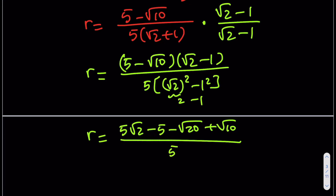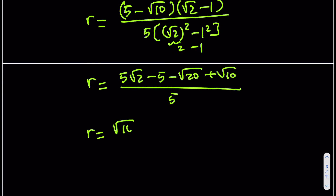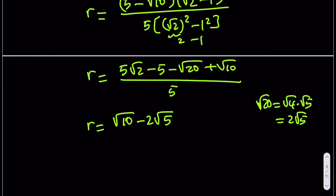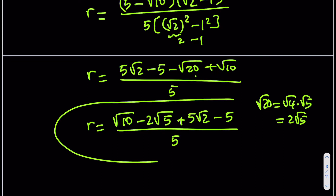So the radius of the shaded circle is r = (√10 − 2√5 + 5√2 − 5) / 5. That's the final answer. Thank you for watching — please comment, subscribe, and like the video. If you have any ideas or comments, let me know. See you in the next video!